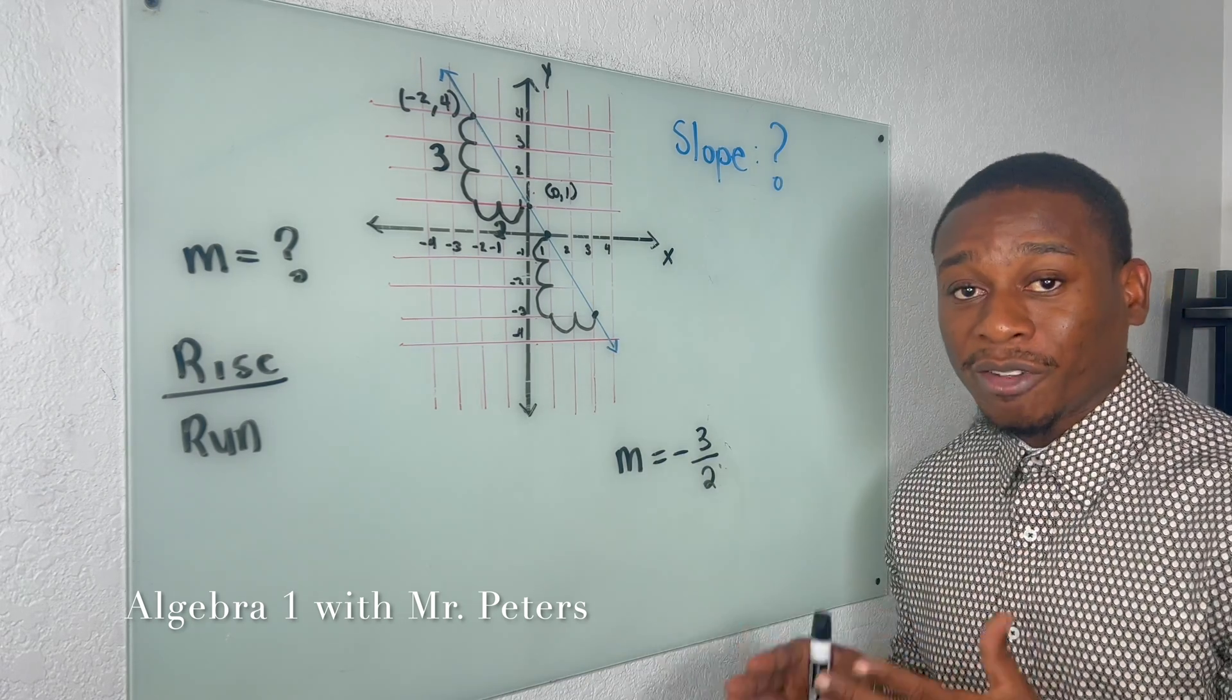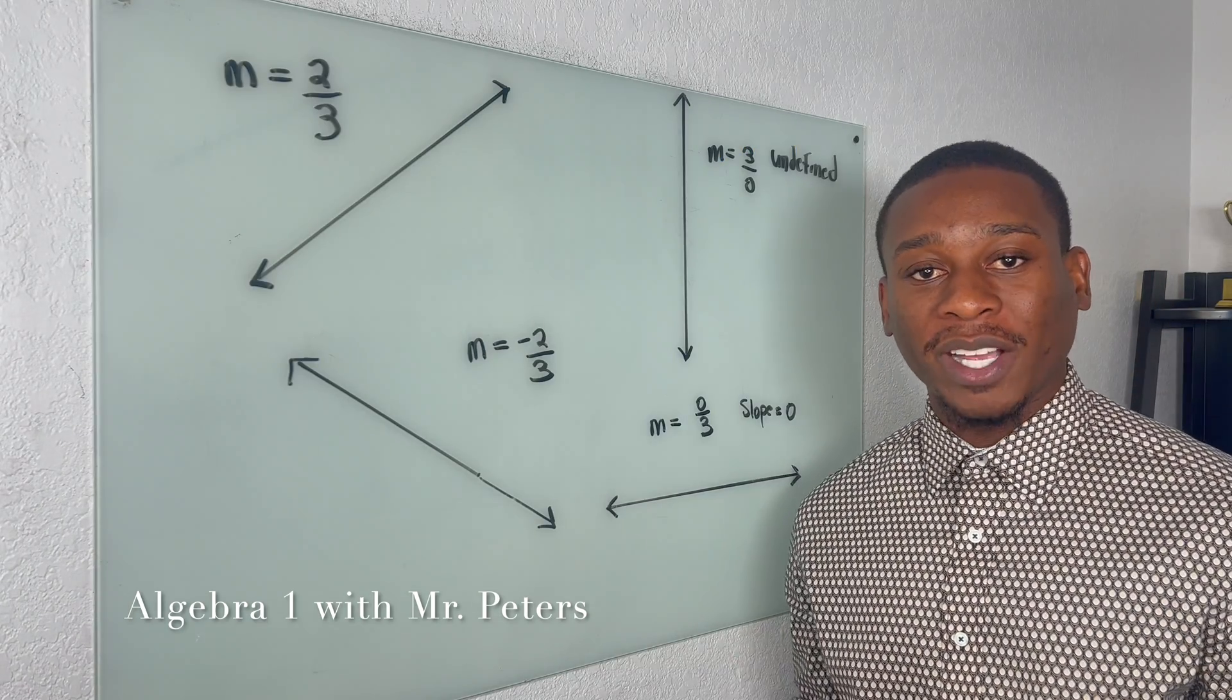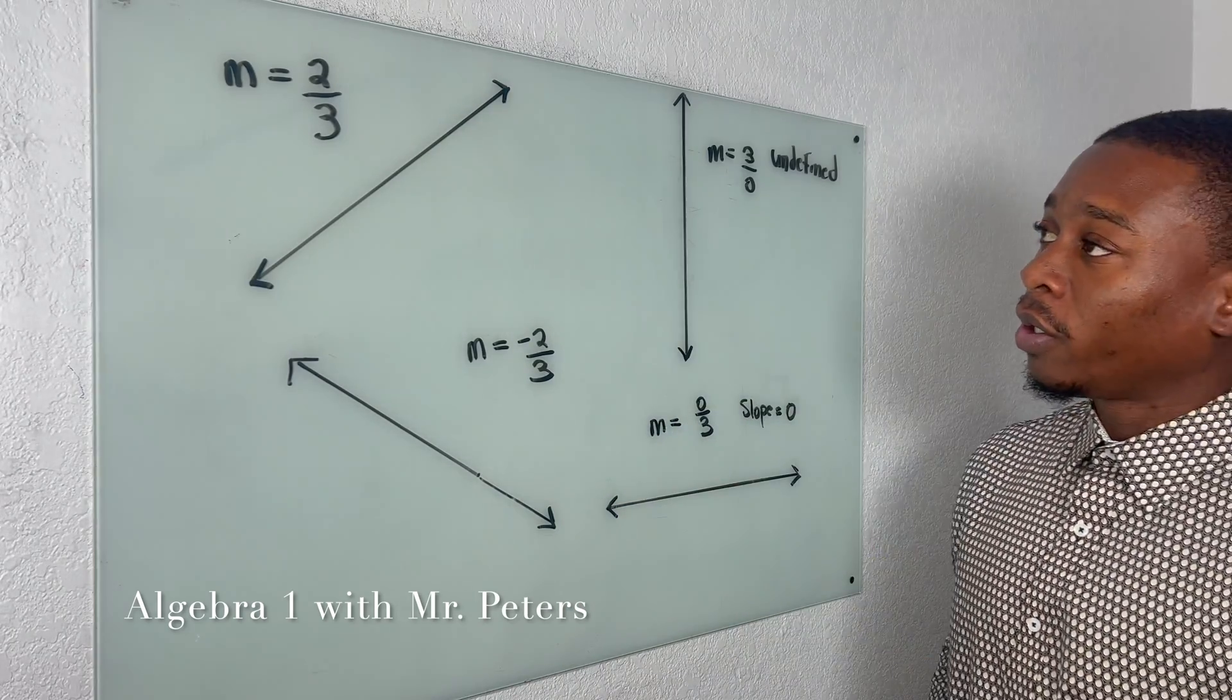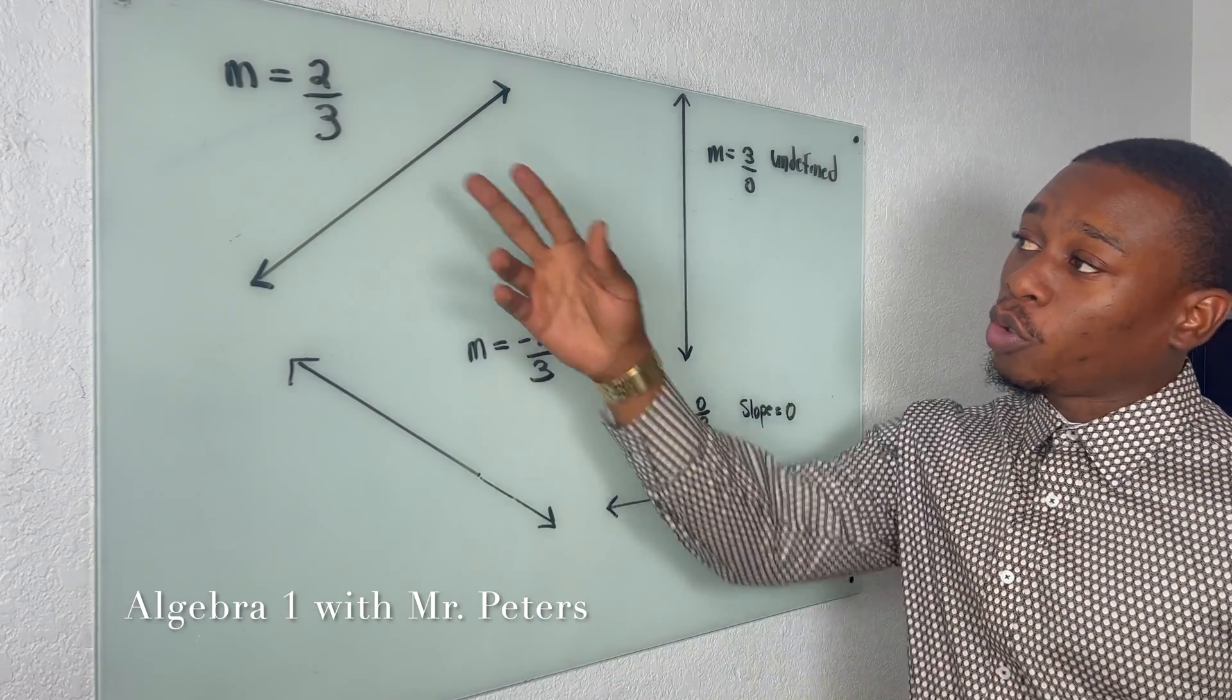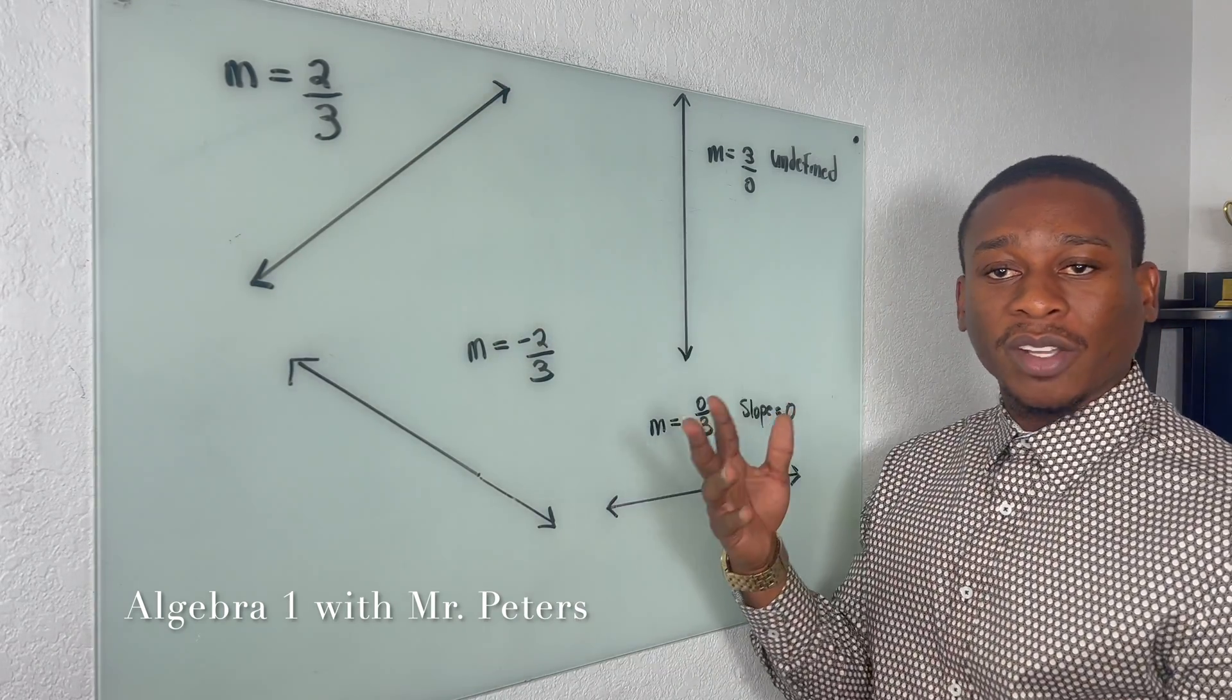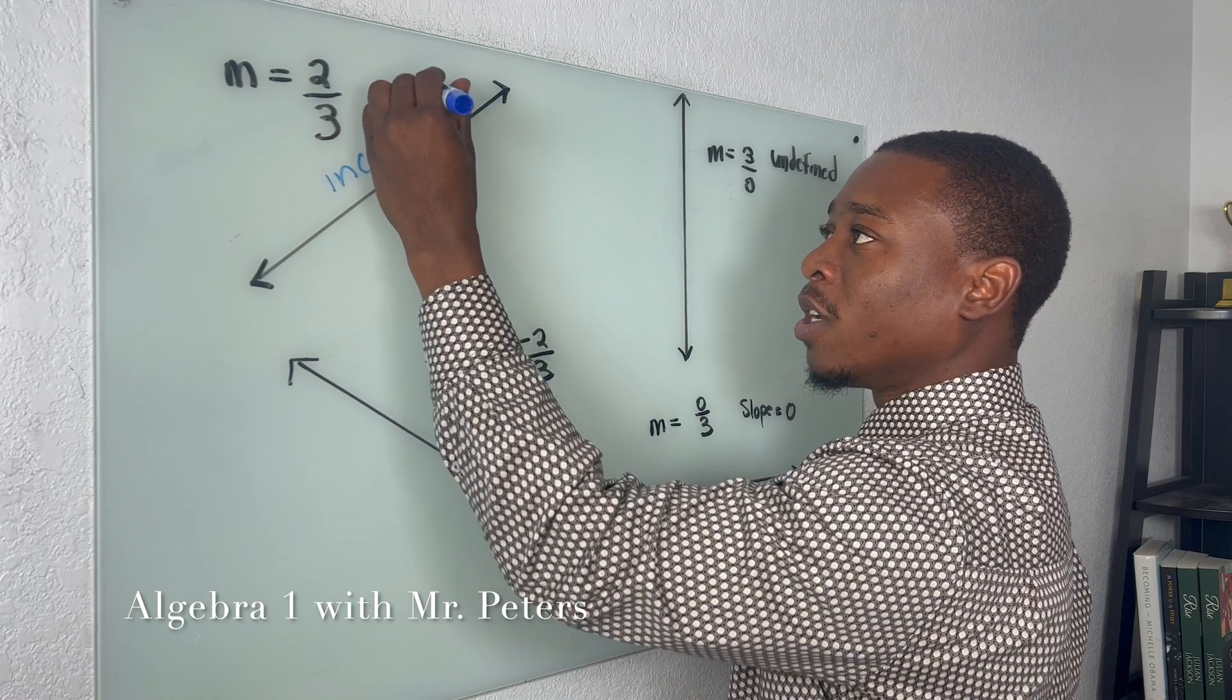Right, and what we're going to do in the last part of this video is talk about horizontal and undefined slopes. Let's get to it. Last part of the video guys, we're talking about the four types of slope. So in problem number one, we have a positive slope, two over three.